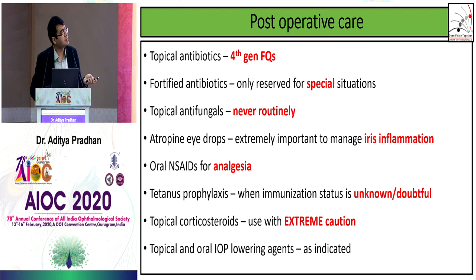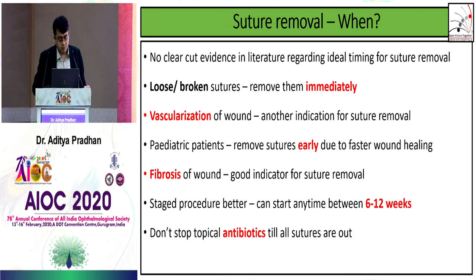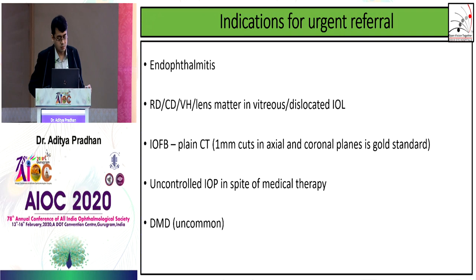Post-operative care: give topical antibiotics; fortified antibiotics only for special situations; do not give routine antifungals. Atropine is extremely important to reduce iris inflammation. For analgesia, use oral NSAIDs. Tetanus prophylaxis is extremely important in contaminated wounds. Use steroids with extreme caution if you are unsure about the wound. For suture removal: remove loose or broken sutures immediately; remove vascularized sutures; in pediatric patients go for early suture removal — a staged procedure — starting anywhere between 6 to 12 weeks. Do not stop topical antibiotics until all sutures are removed.